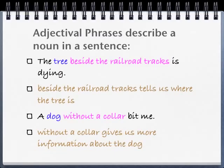Adjectival phrases describe a noun in a sentence. For example: 'The tree beside the railway tracks is dying.' Beside the railway tracks tells us where the tree is — it gives more information about the noun. Another example: 'A dog without a collar bit me.' Without a collar is the adjectival phrase, and it gives us more information about the dog, which is the noun.